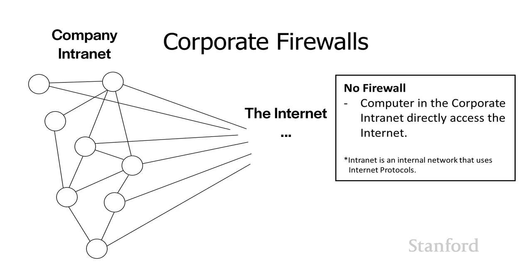The first thing I want to talk about is firewalls. We'll talk about corporate firewalls first, and then we'll talk about personal firewalls. Let's consider what happens if we have a company with no firewall. We've got a company internal intranet, and every computer in the intranet can access the intranet. This means all our computers are vulnerable to attacks from outside. It also means potentially somebody could be spying and sending information out of the company — there are no controls at all. So this is clearly a bad situation.